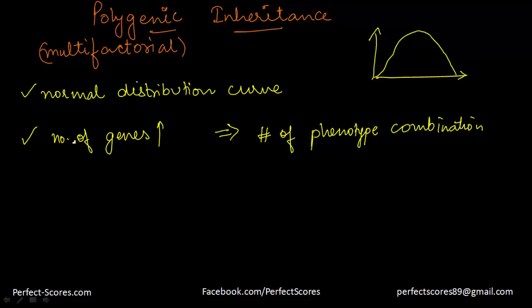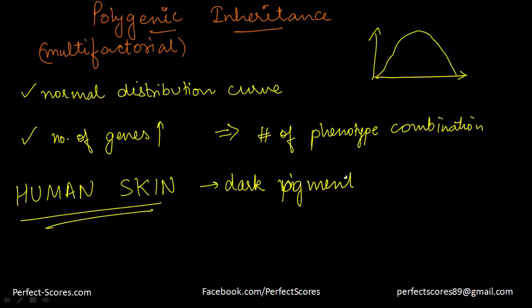Let's take one example of polygenic inheritance which is the case of the human skin color. Now the human skin color is controlled by the amount of the dark pigment which is melanin. How much of the dark pigment melanin is present in the skin controls the amount of the pigment and what is the color of the human skin. Now at least four genes are responsible. There could be more, but as of now at least four genes are responsible for determining the human skin color.